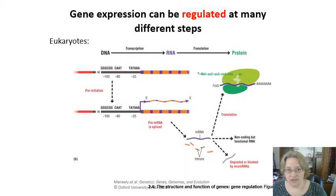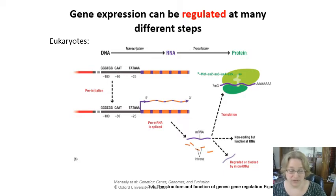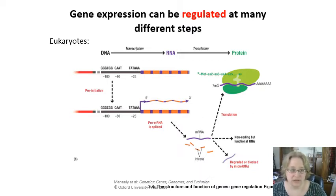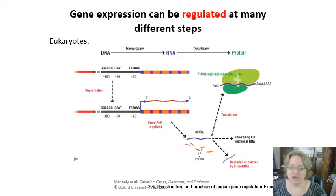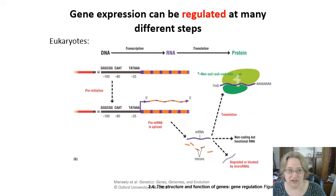In eukaryotes, it's quite a bit more complicated. The mRNA has to get spliced — the introns have to get taken out and the exons spliced together. It has to leave the nuclear membrane, so it also needs a cap and a tail to prevent degradation. It can get degraded or blocked by microRNAs, and then it still has to reach a ribosome and get translated. So there are many more steps in eukaryotes where gene regulation can occur.